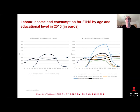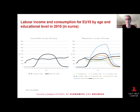These are the labor income and consumption levels for EU-15 by age and educational level for 2010. On the right-hand side, the black line is average labor income and average consumption. The green lines represent consumption and labor income for primary education, orange lines for secondary education, and blue lines for post-secondary education. You can see that the labor income on the right-hand side is a bit skewed to the right, because of the tertiary education that follows the same pattern.